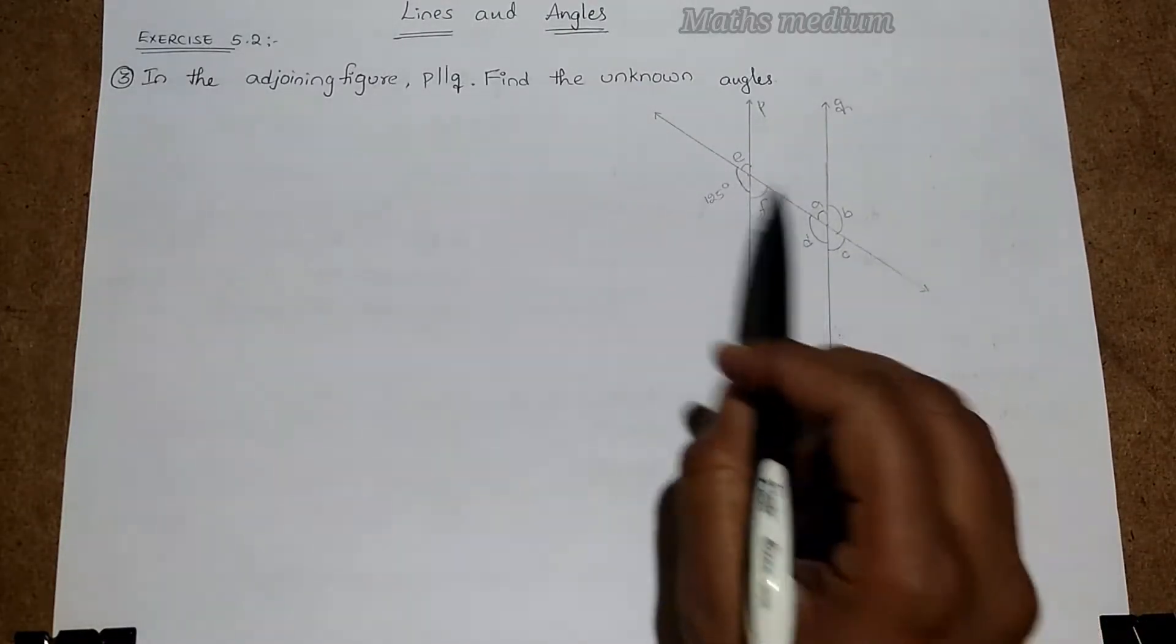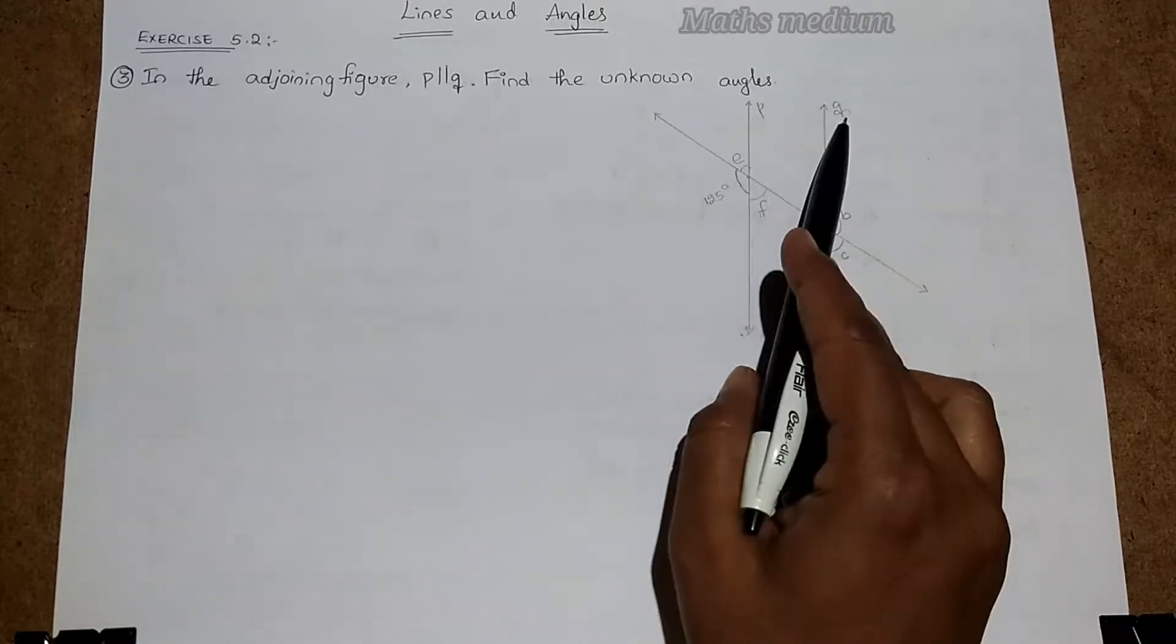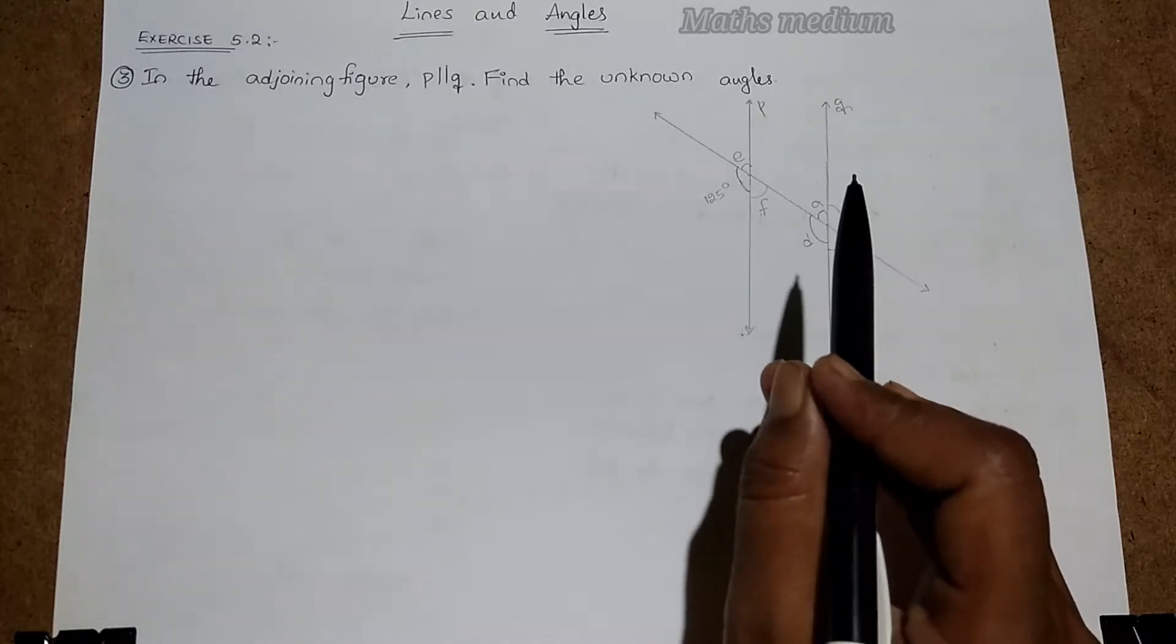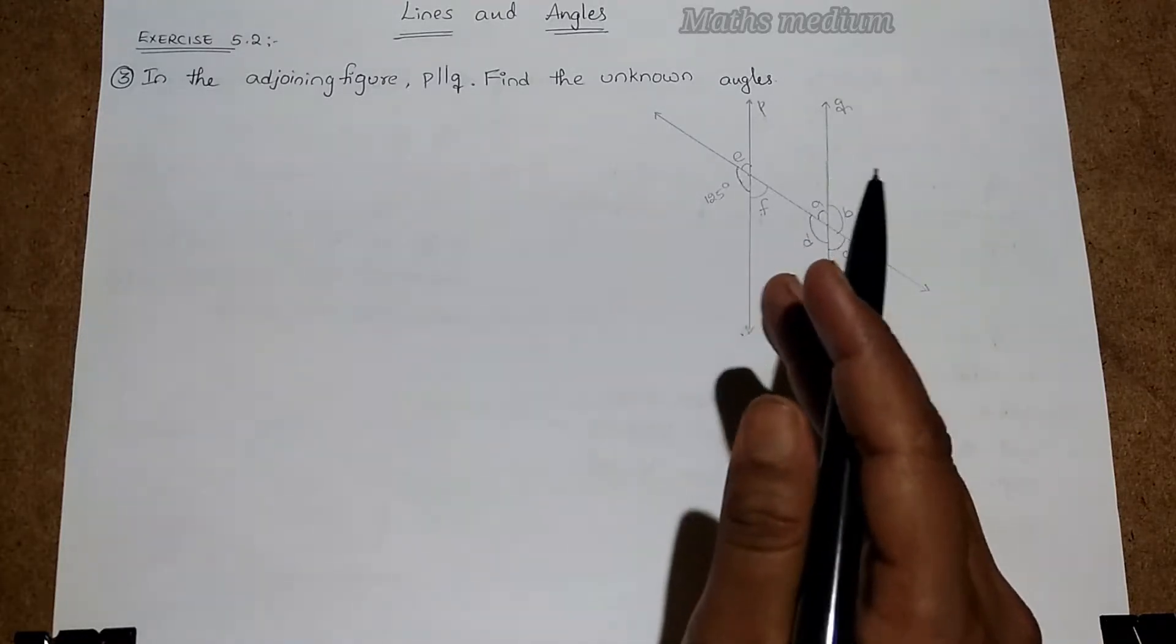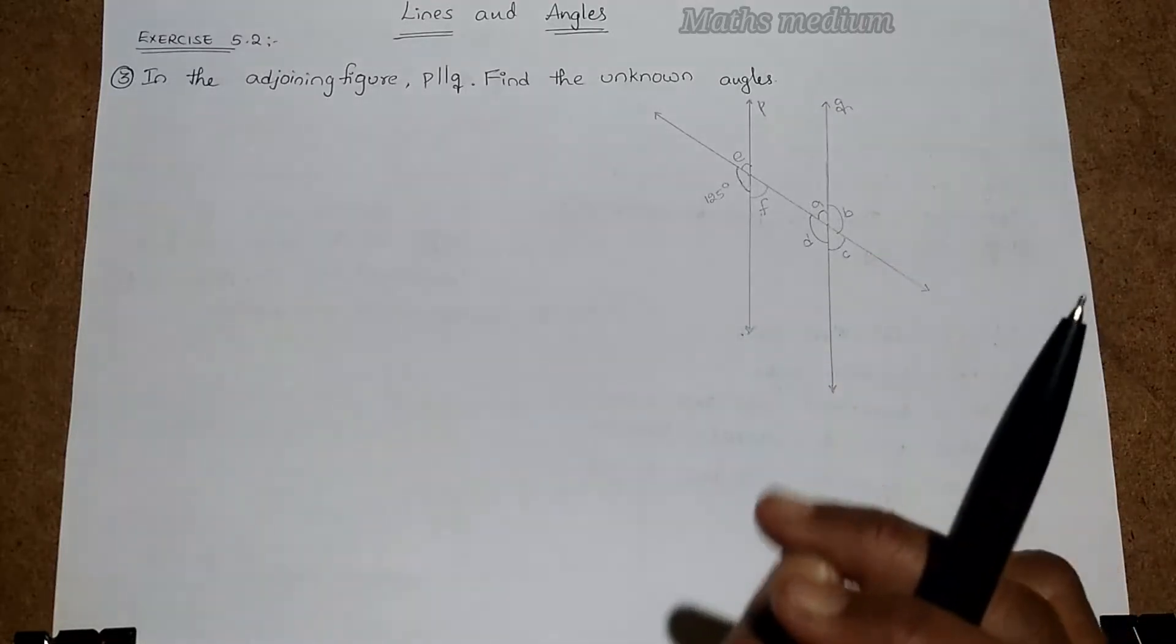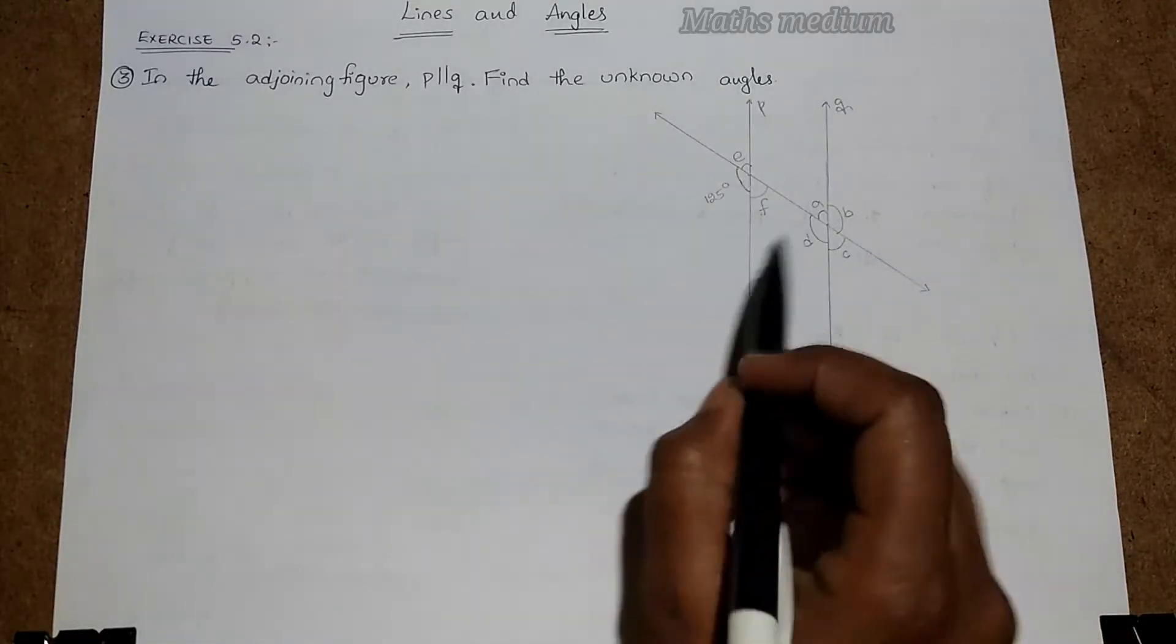This is the transversal line. These two, P and Q, are parallel to each other. In previous videos I already explained to you about the transversal angles made by the parallel lines, about lines and angles also. Check the description box for that links. Next, coming to here.